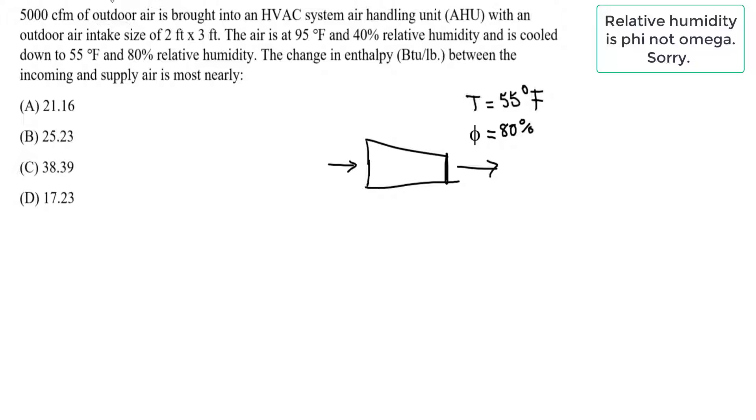And it comes in, the air from the outdoor, comes in at this flowrate, but it's going to be outdoor air and specifically it's at 95 degrees Fahrenheit and 40% relative humidity. So T here is 95 degrees Fahrenheit and omega, or relative humidity, is 40%.